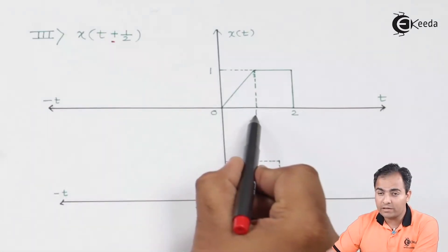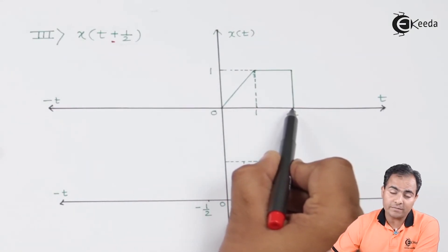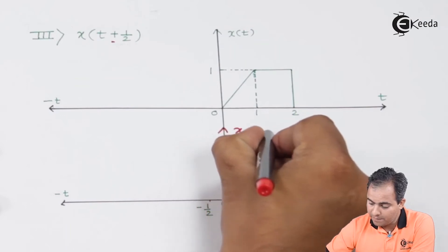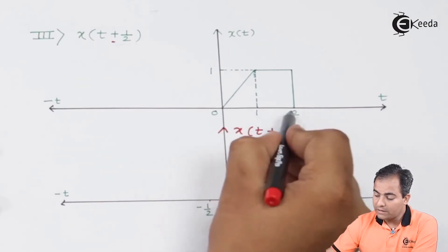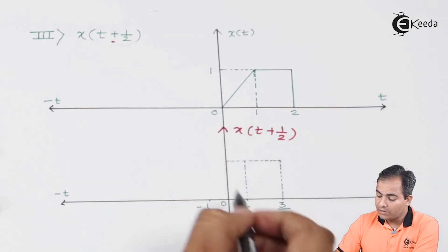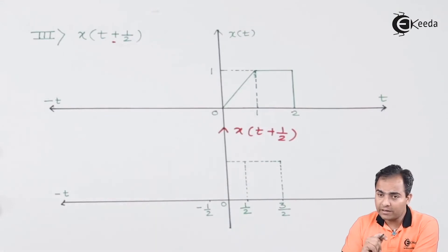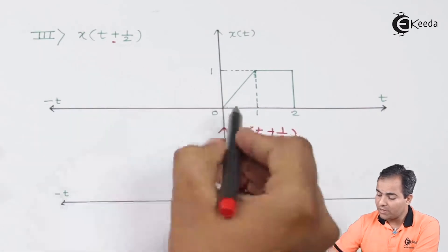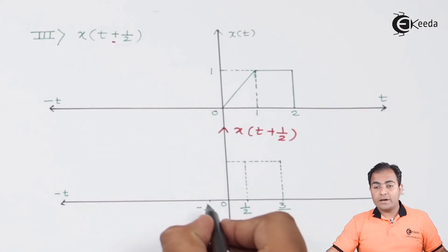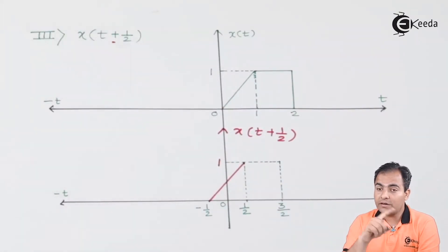Similarly, the instance at one also shifts left by 1/2, so its new location is 1/2. The instance at two shifts left by 1/2, giving a new location of 3/2. For x(t + 1/2), all samples are shifted left by 1/2: two moves to 3/2, one moves to 1/2, and zero moves to minus 1/2. Since the slope was between zero and one, it is now between minus 1/2 and 1/2.